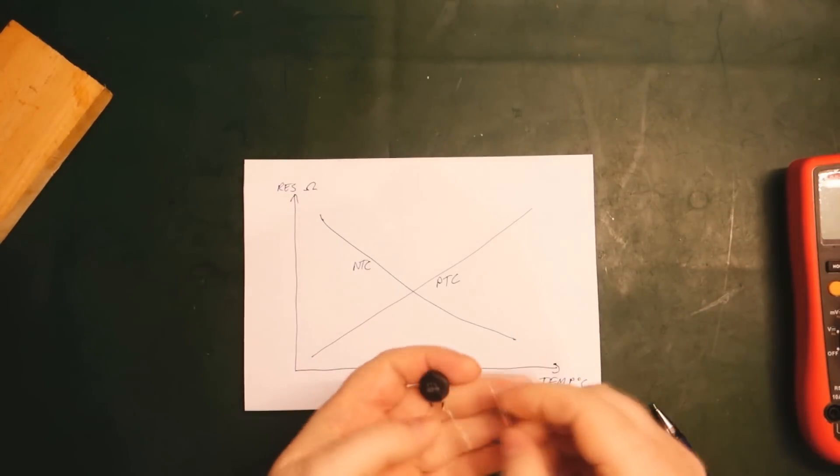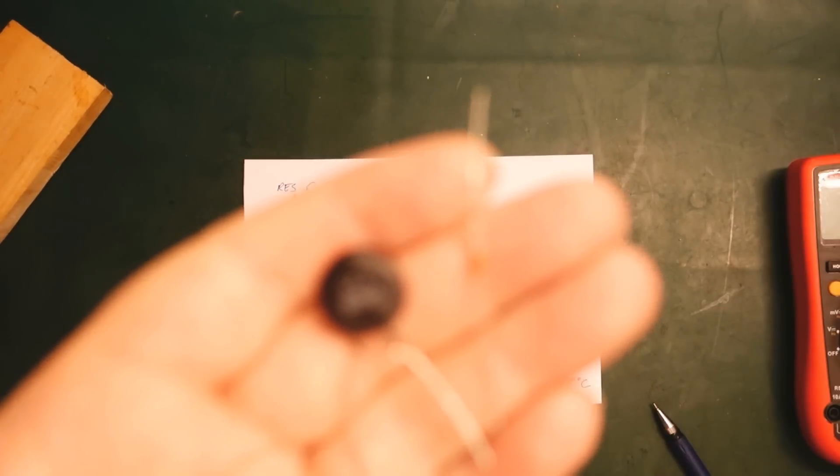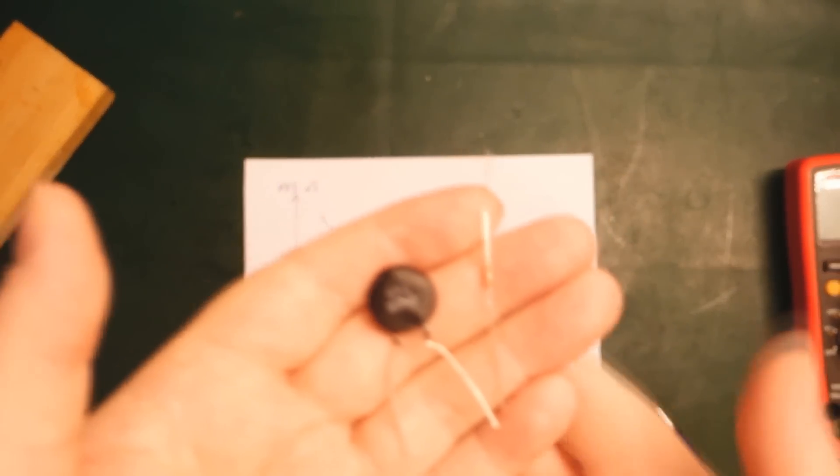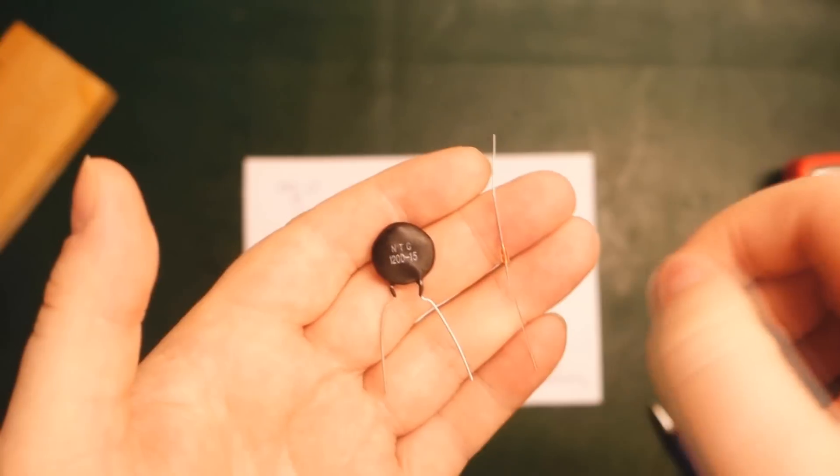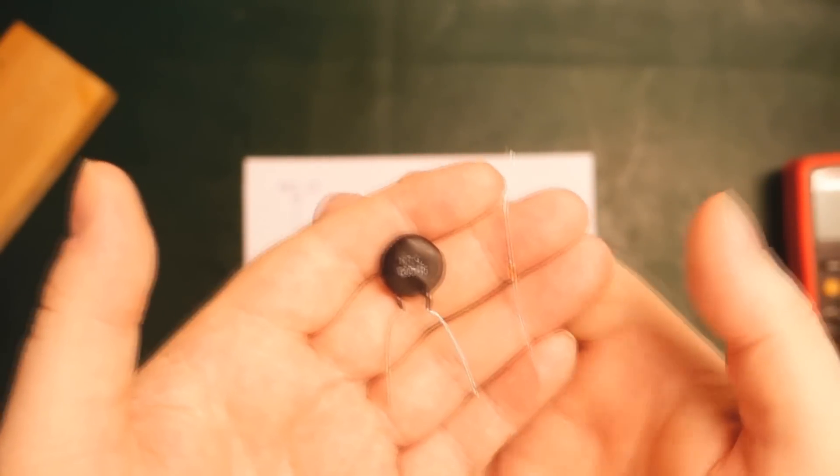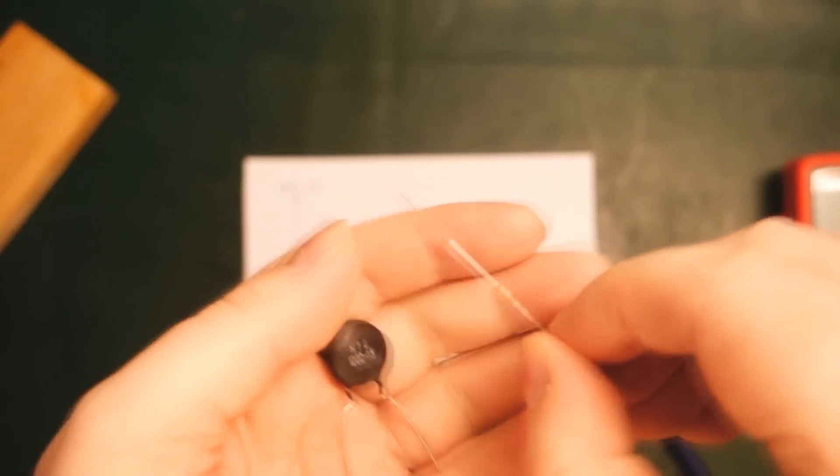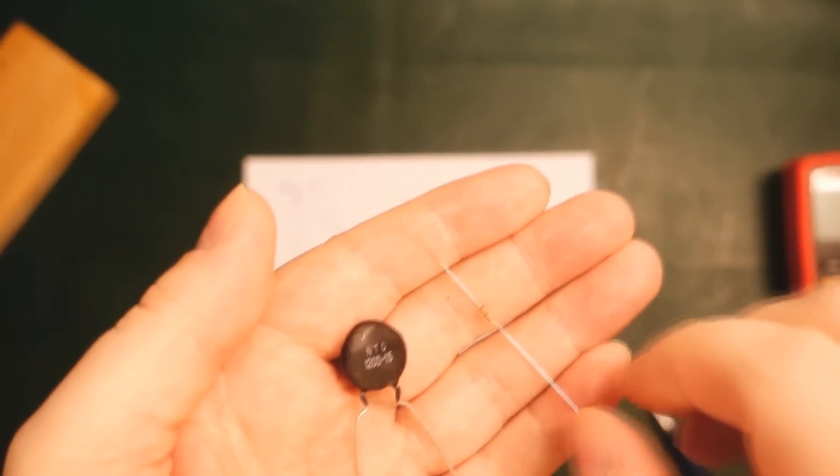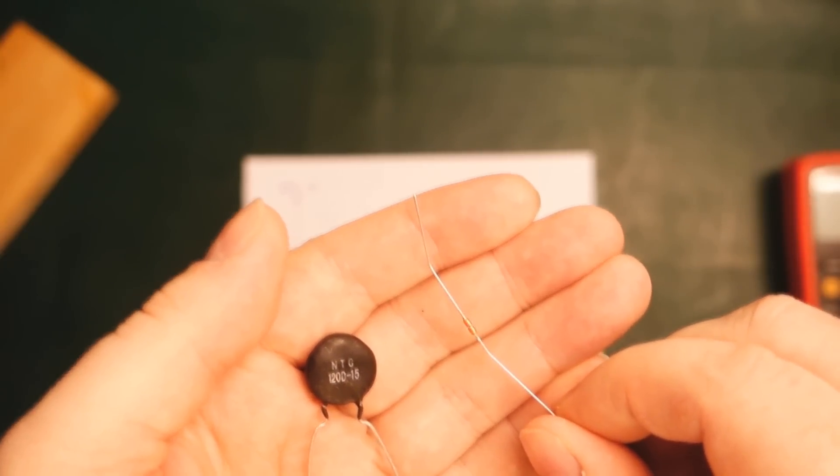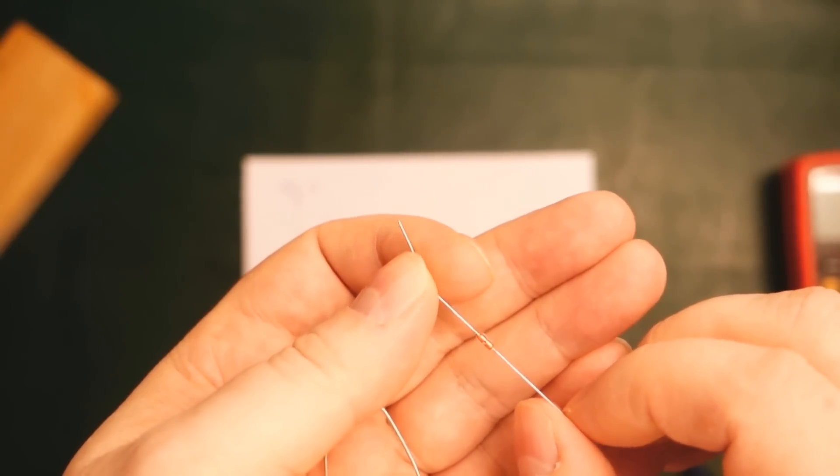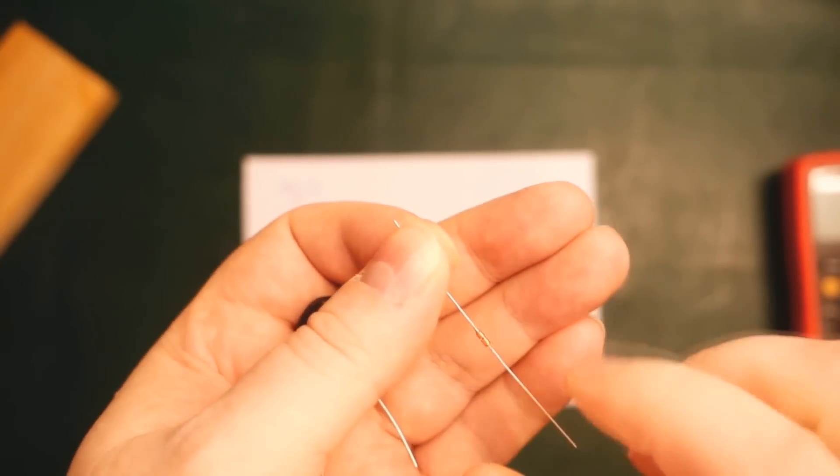What I have here is a couple of examples of NTC thermistors. They are quite different, designed for two completely different purposes. This is a very large disk type, and what we have here is a 10k NTC thermistor. It's typically used for temperature measurements, so it will have a reasonably well-controlled change of resistance over temperature.